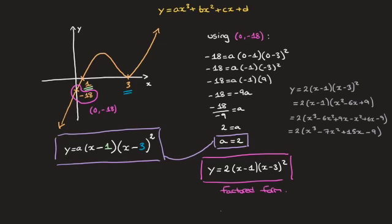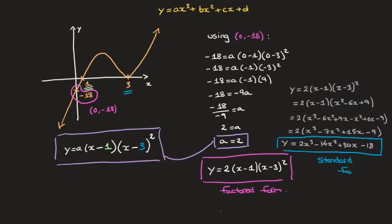Finally, I distribute the 2 across the parentheses, which leads us to the equation written in standard form. That's y equals 2x cubed minus 14x squared plus 30x minus 18. And we're done. We've just found this polynomial's equation in its standard form. And I'm just boxing that in blue there. And I'll write standard form. And there we go.